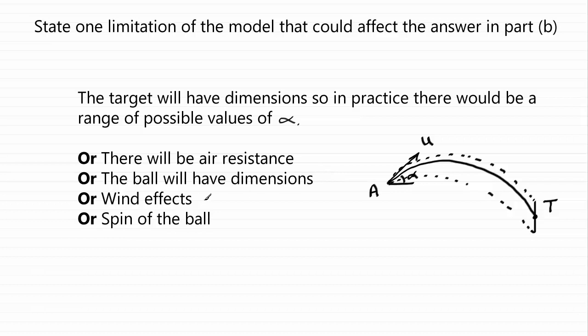There could be effects from the wind. That blows it off course. Or even the spin of the ball. When you spin a ball, that can make the ball curve in a different direction.